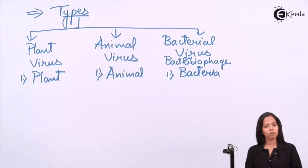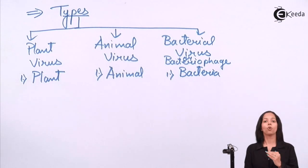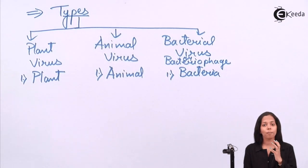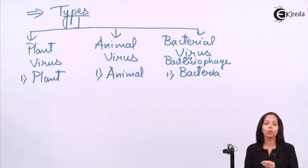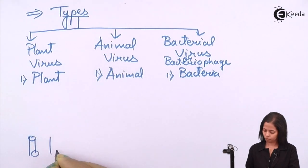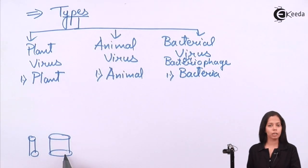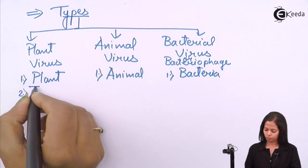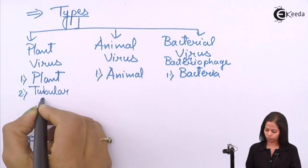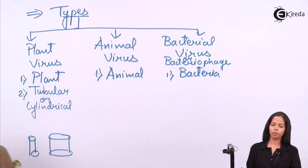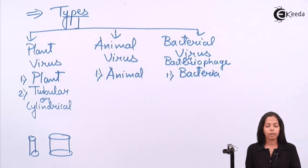Now the next thing which we have to study is symmetry of this virus. Before knowing the symmetry we should know the shape of the structure of the organism. How does plant virus look? Plant virus looks either tubular or cylindrical. So what will be the symmetry? The symmetry will be bilateral or vertical.